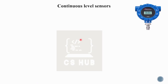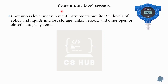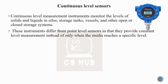Continuous level sensors monitor the levels of solids and liquids in silos, storage tanks, vessels, and other open or closed containers. They provide constant level measurement instead of only detecting when the media reaches a specific level. They measure fluid levels within a range rather than at one point.